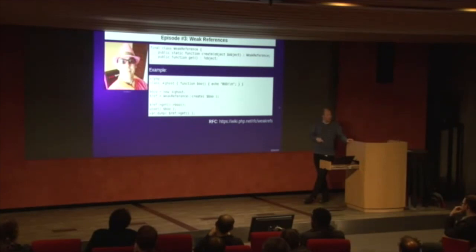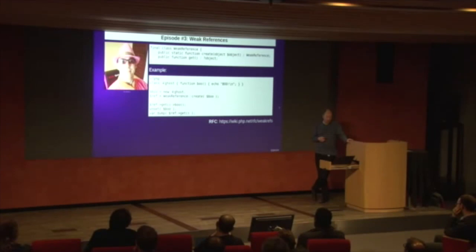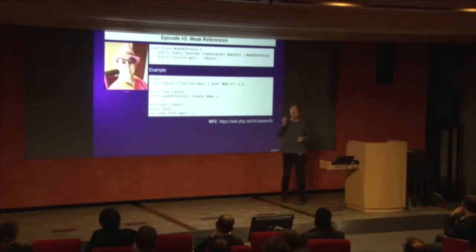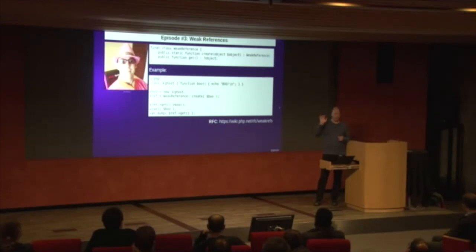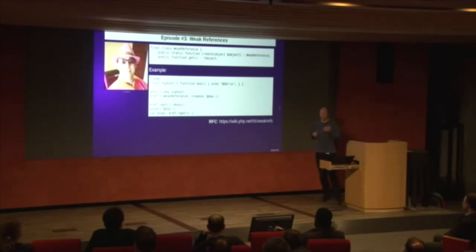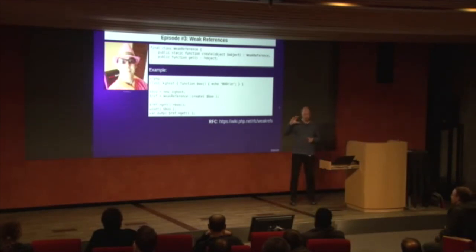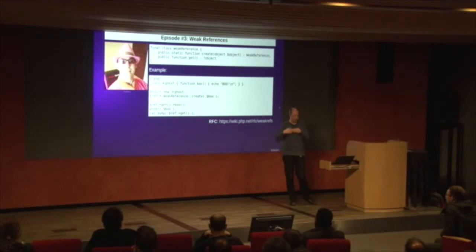I also skipped quite a few episodes because we talk about lots of nonsense as well. Episode 3, I spoke to Joe Watkins — he is the person that does pthreads and things like that. He proposed weak references. Weak references is an interesting concept. In PHP, if you have A equals an array with 10,000 elements and then you're doing B equals A, in PHP that does not copy the whole array — that's good news.